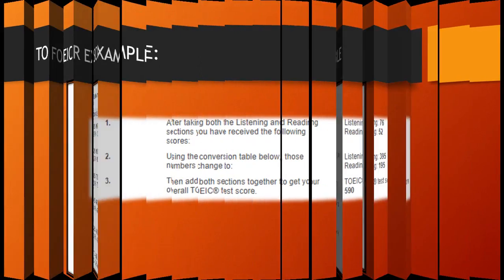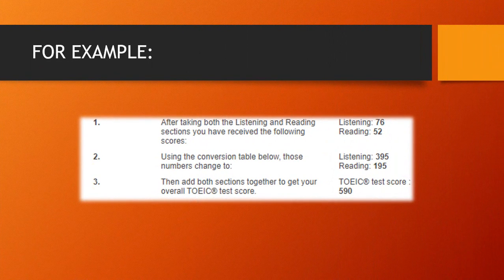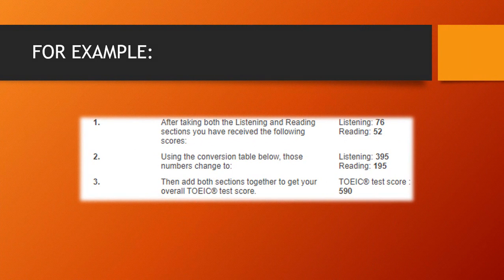Let's take a look at this example. After taking both the listening and reading sections, you have received the following scores: Listening, 76. Reading, 52. Using the conversion table below, those numbers change to: